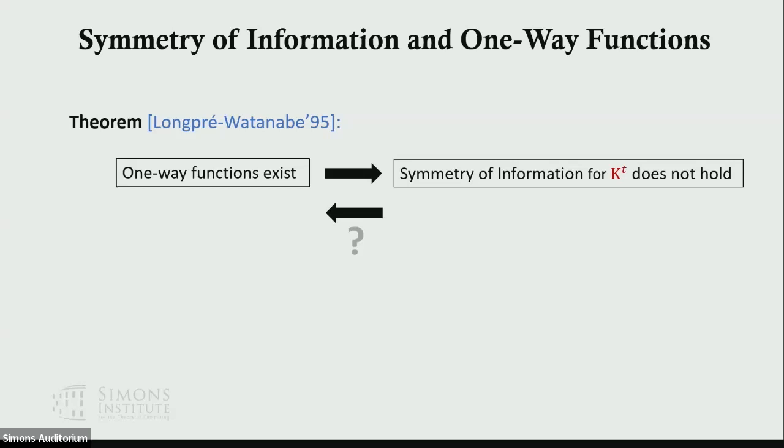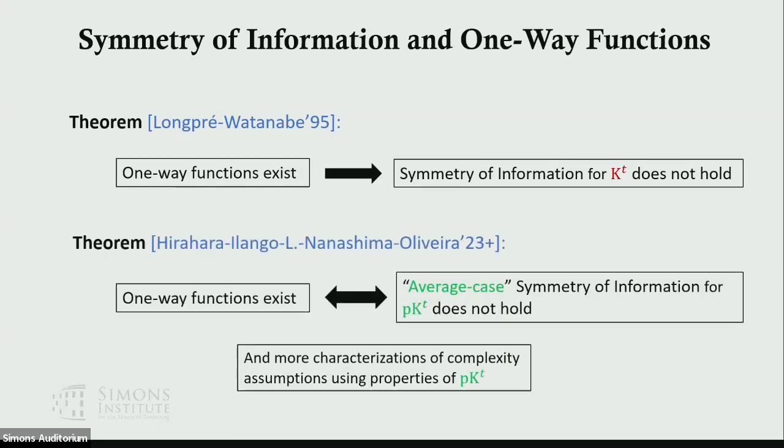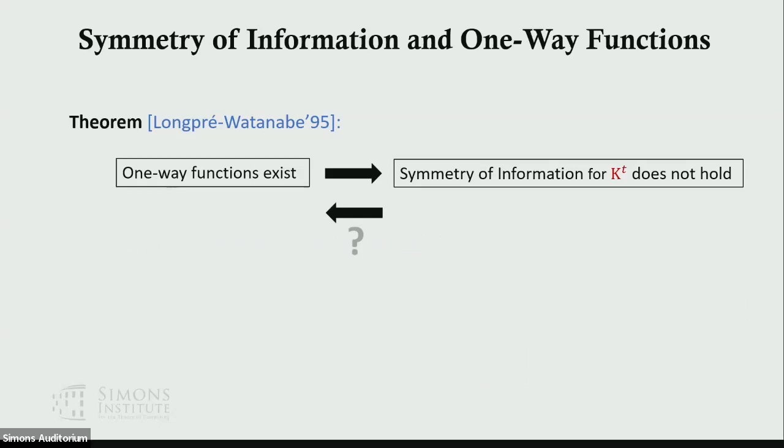Intuitively, if we have a one-way function f, or let's say if we have a one-way permutation, then from x we can compute f(x) efficiently. But if we are just given f(x), we cannot get back x efficiently. So there's an asymmetry of information between these two strings if we take into account the time. Igor Oliveira formally connects the existence of one-way functions to the failure of symmetry of information for kt, but the result only shows one direction. Since then, it has been an open question whether we can get some if-and-only-if statement between one-way functions and symmetry of information.